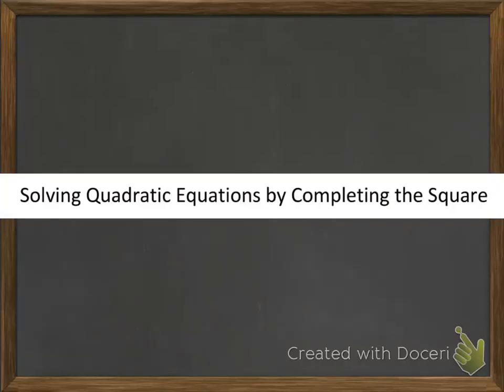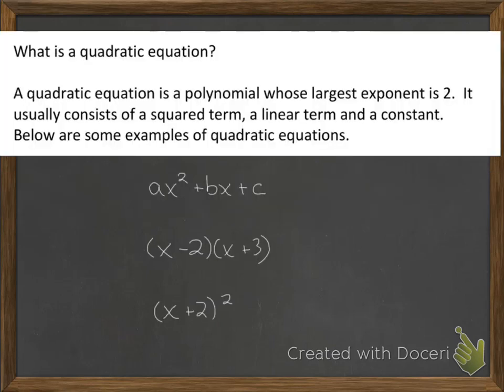Welcome to this video on solving quadratic equations by completing the square. First of all, what is meant by a quadratic equation? A quadratic equation is a polynomial whose largest exponent is 2. It usually consists of a squared term such as ax squared, a linear term such as bx, and a constant such as c.